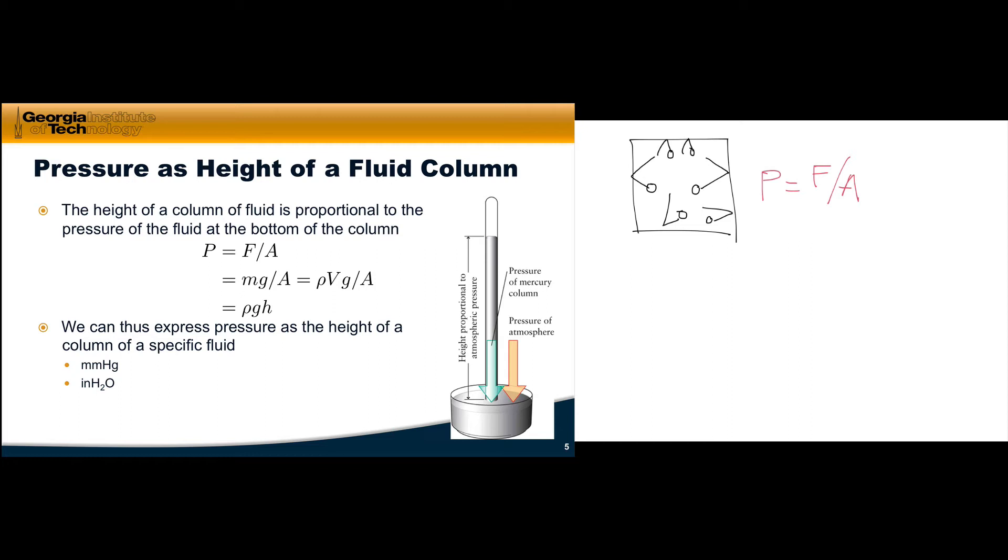We can think of pressure as the height of a column of fluid in a gravity field. Pressure is defined as force divided by area, but the force exerted by a column of fluid with a particular mass equals the mass times acceleration due to gravity.